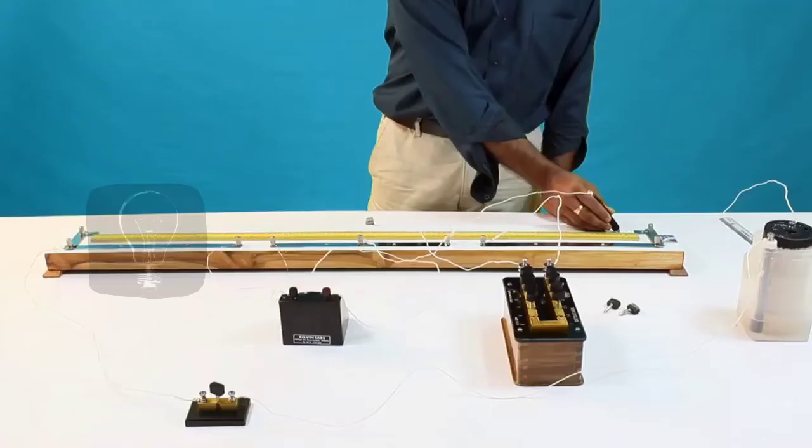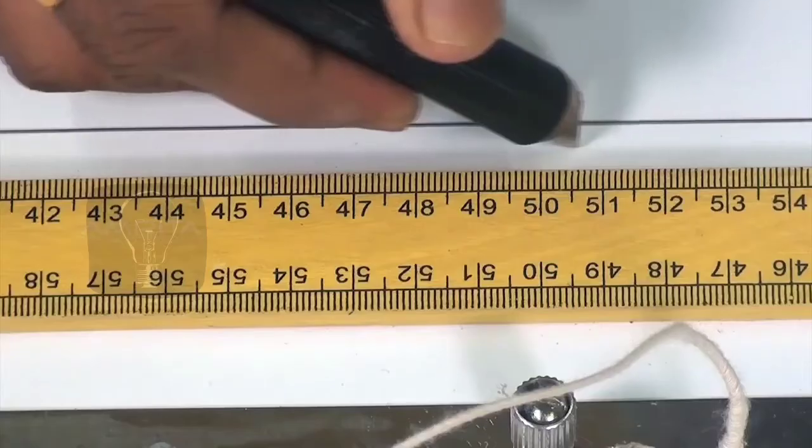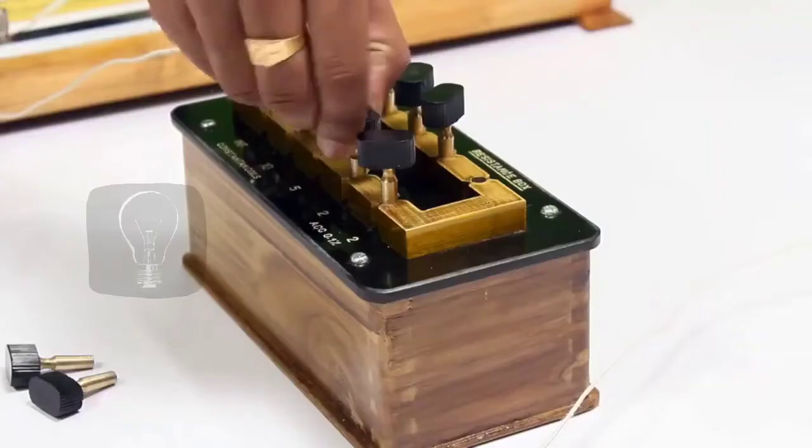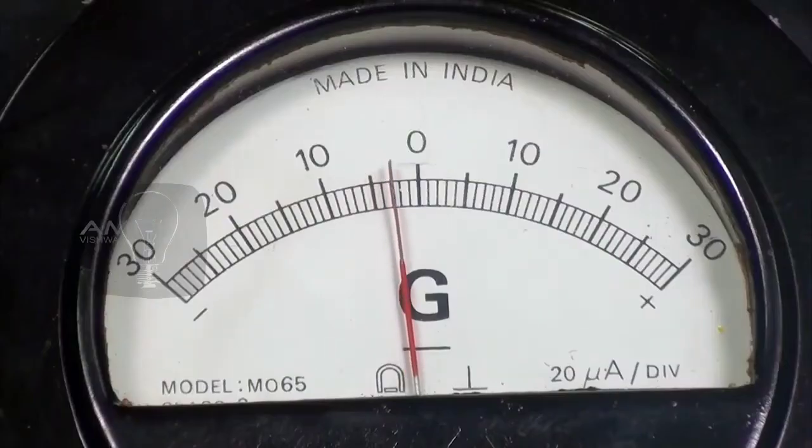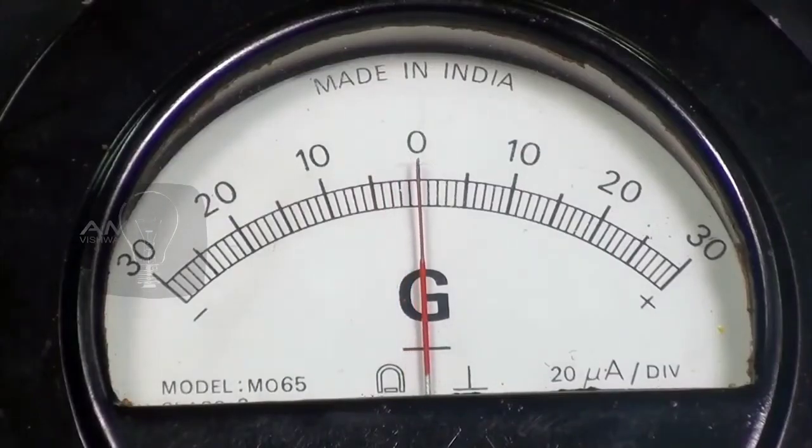Now press the jockey almost at the middle of the wire on the meter bridge and introduce a suitable resistance R in the resistance box so that the galvanometer shows zero deflection.